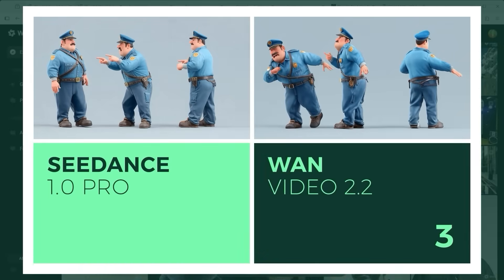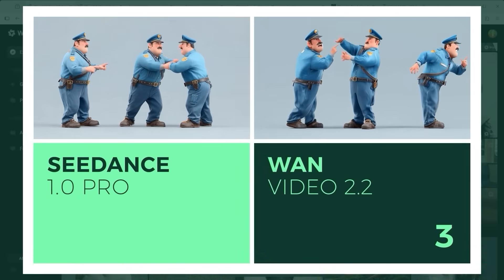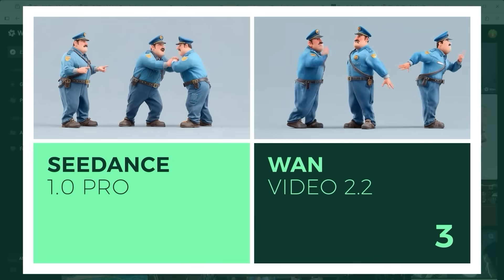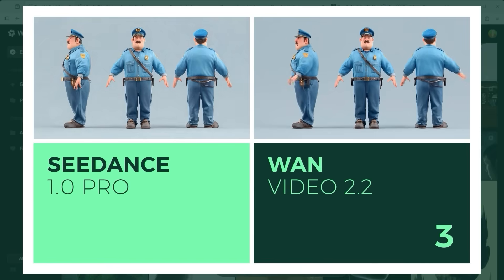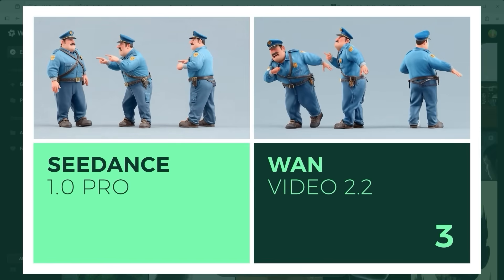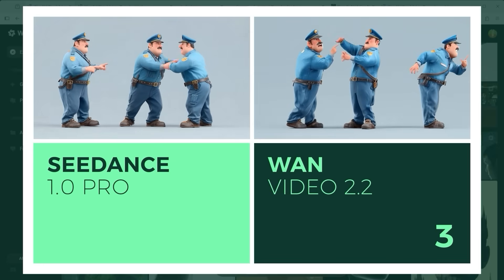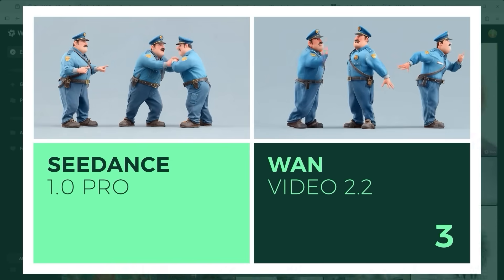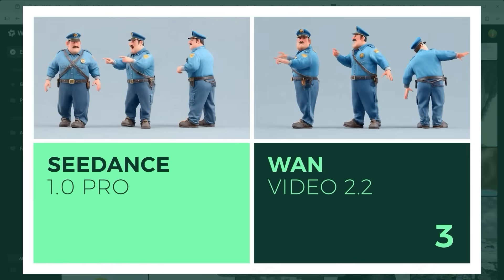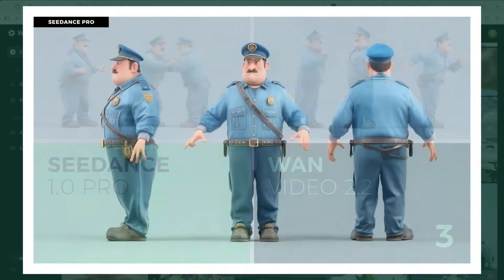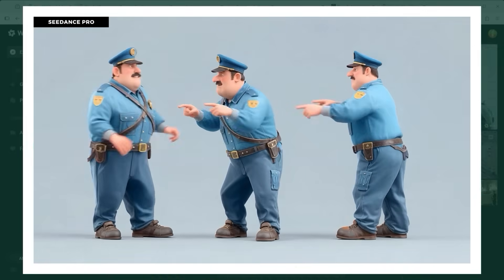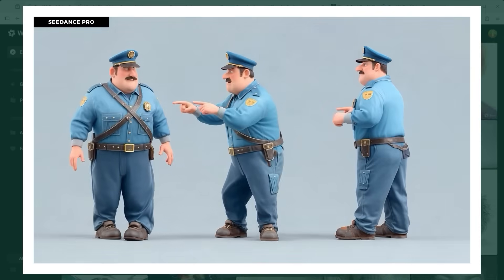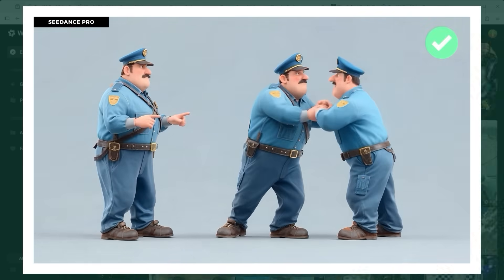Example 3: I wanted to see if the AI could animate several characters interacting at once. The prompt: three uniformed figures point fingers at each other, gesture wildly and take turns nudging one another back and forth. C-Dance Pro captures the scene well — the characters respond to each other in a believable way. One 2.2 also performs quite strongly, but if you look closely, C-Dance handles the gestures and pacing with more precision. Point goes to C-Dance Pro.